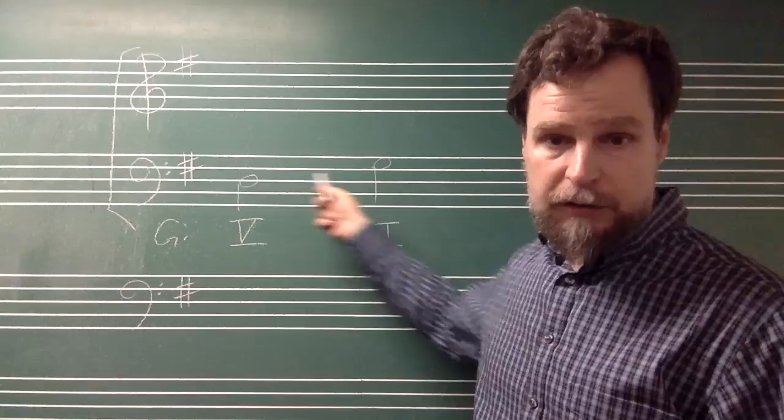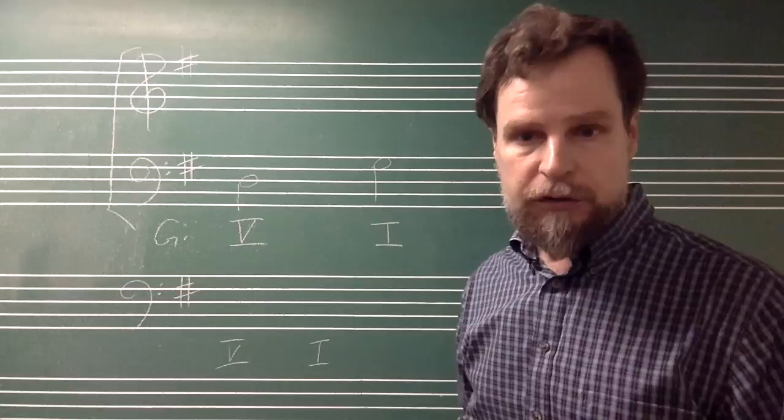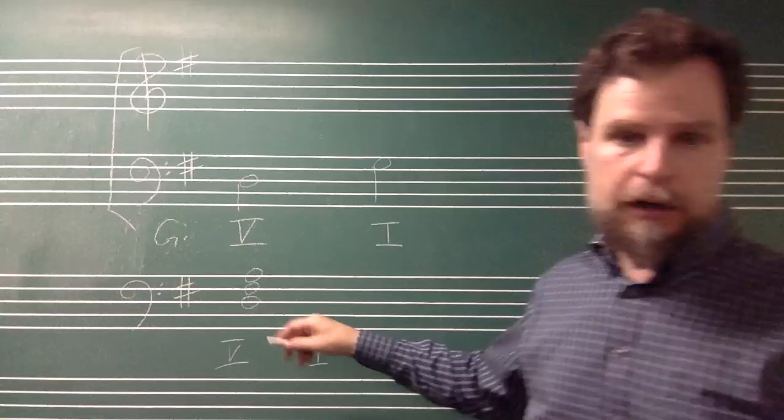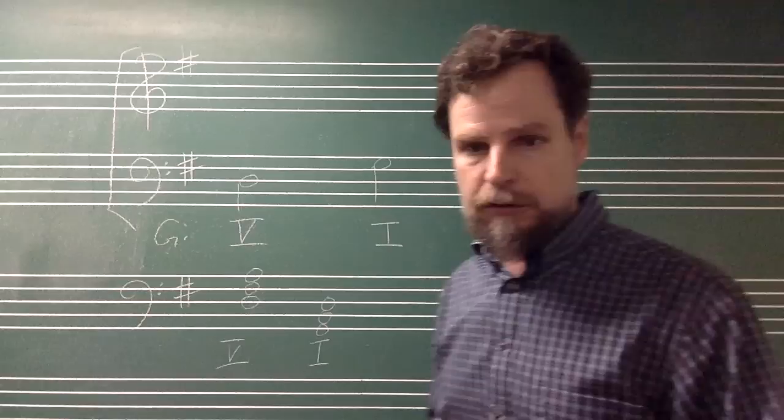So when we have our V chord, D will be in the bass. When we have our I chord, G will be in the bass. I'm now going to put down a cheat staff that shows us the notes of this chord. We see that our V chord is D, F sharp, A. And our I chord is G, B, D.